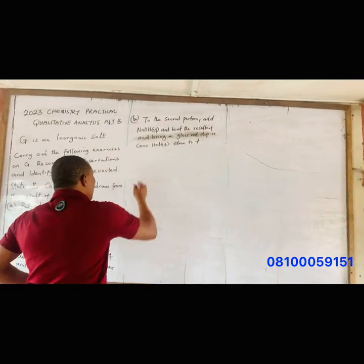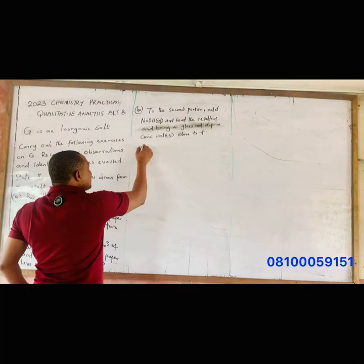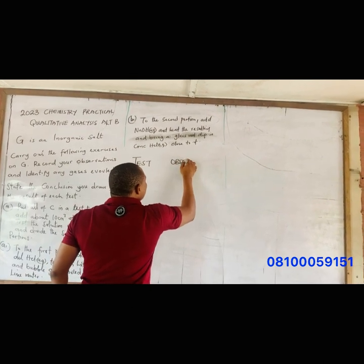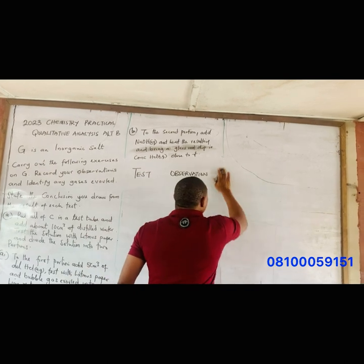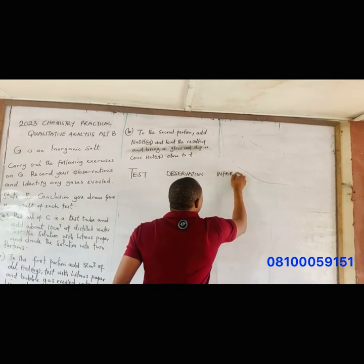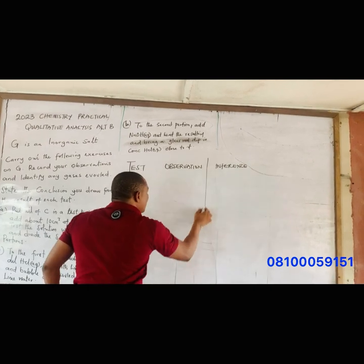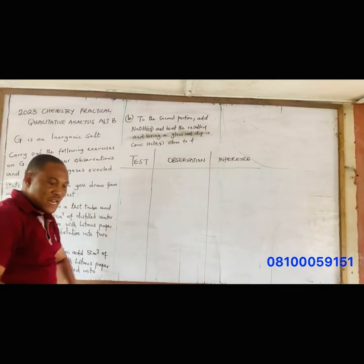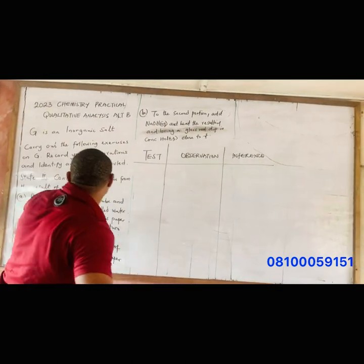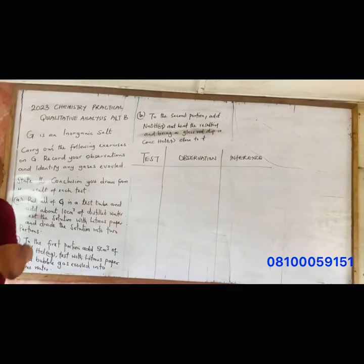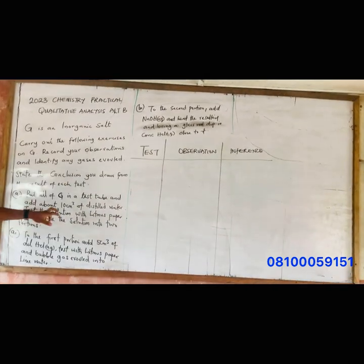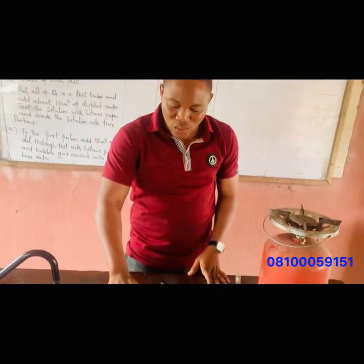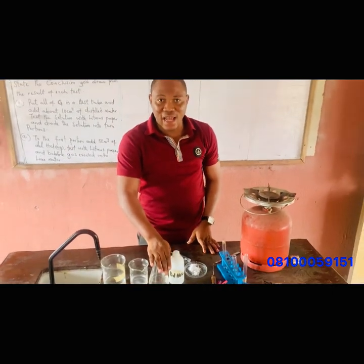For every qualitative analysis we must have our tests, we must have our observations, and we must have our inferences — very important. So let's get started. Put all of G in the test tube and add about 10 cm³ of water. You should be given all this: this is my lime water, this is my sodium hydroxide, this is my galactose — all will be labeled in your center.